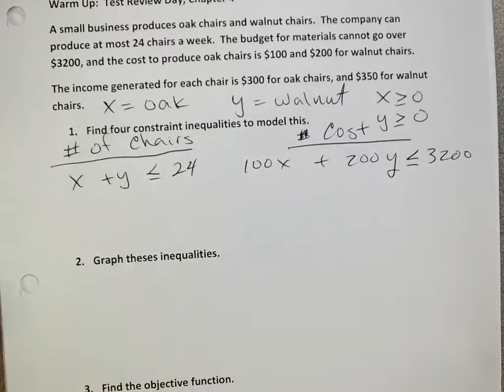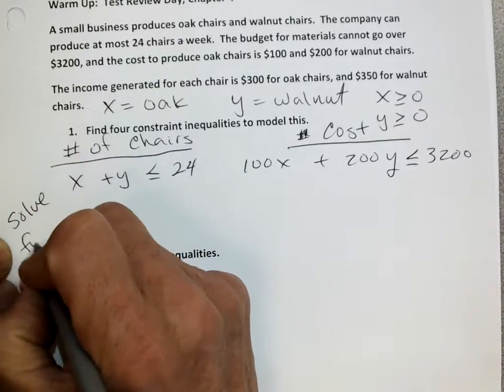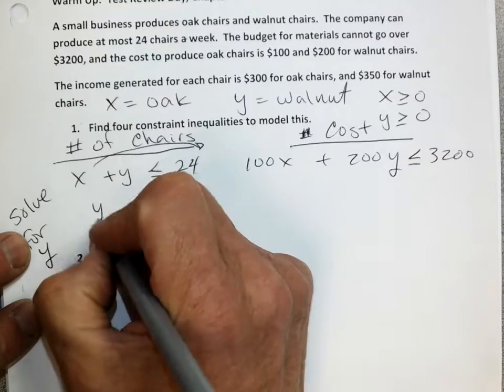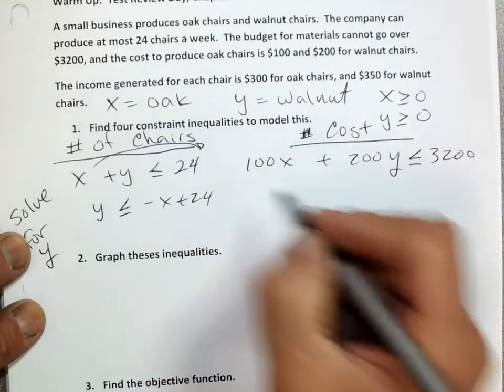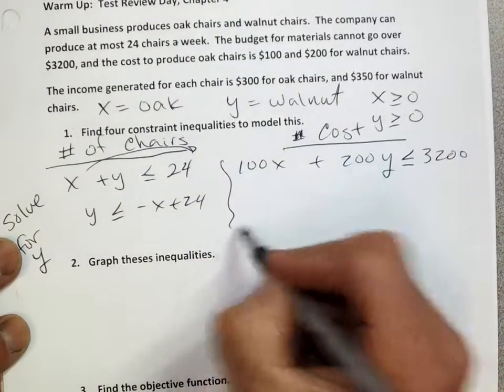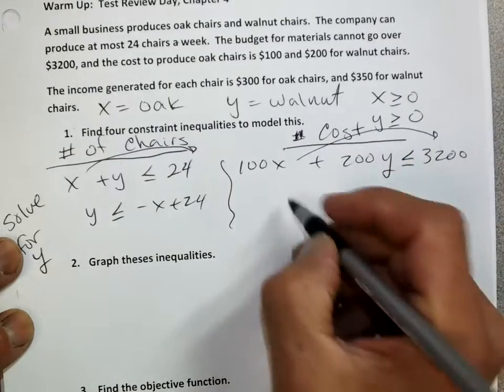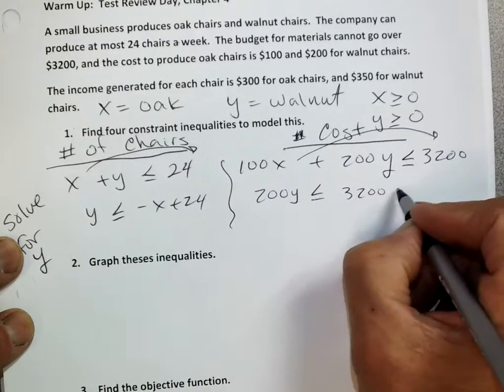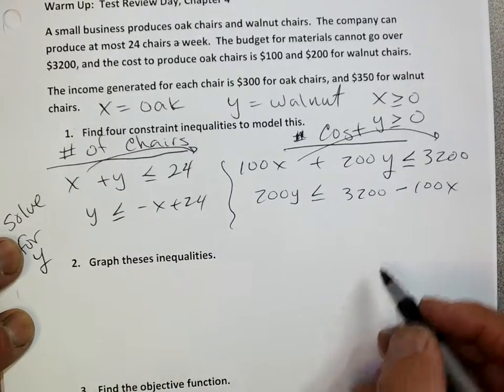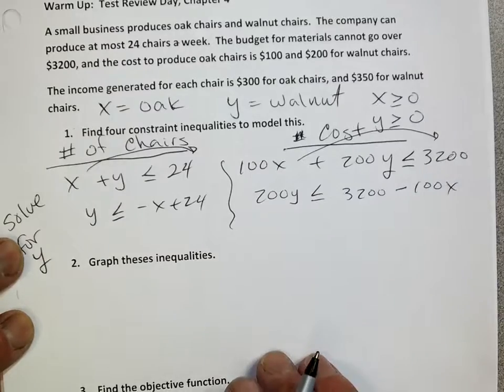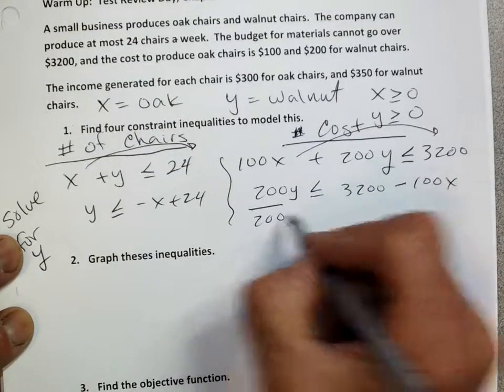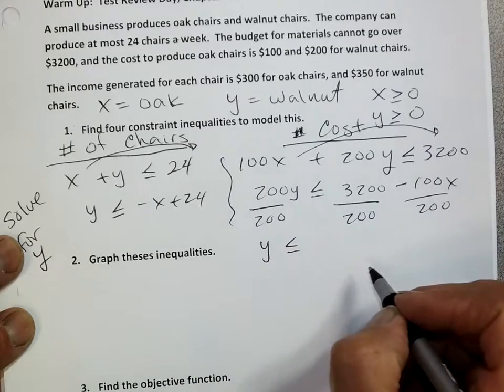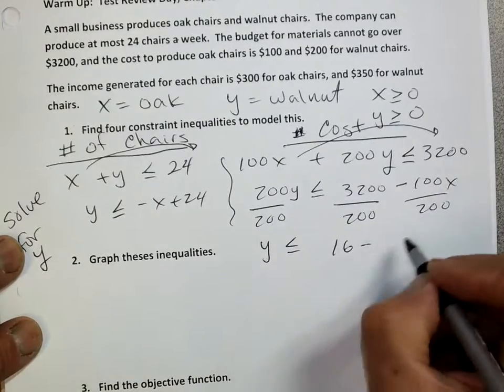Okay. So if we want to graph these inequalities, first thing I'm going to do is solve for y. So on the first equation, I'll bring over my x by subtracting it. Y is less than or equal to negative x plus 24. And on the second equation, same thing. I've got to solve for y, so I'll bring over the 100x by subtracting it. So I'll have 200y is less than or equal to 3200 minus 100x. Divide by 200. So I'm going to rewrite this as y is less than or equal to 16 minus 1 half x.